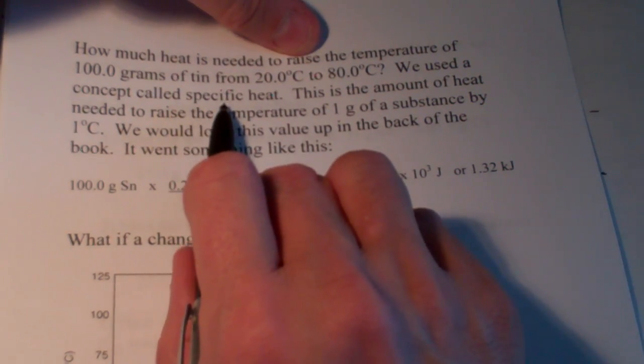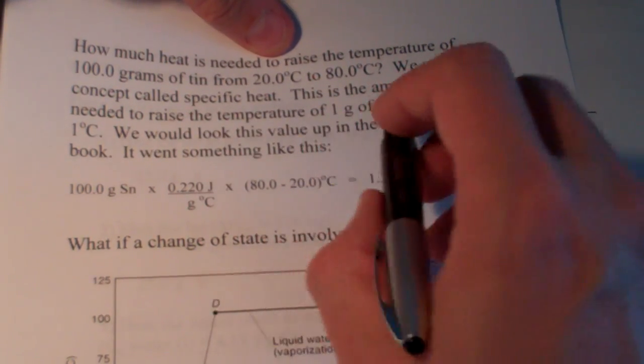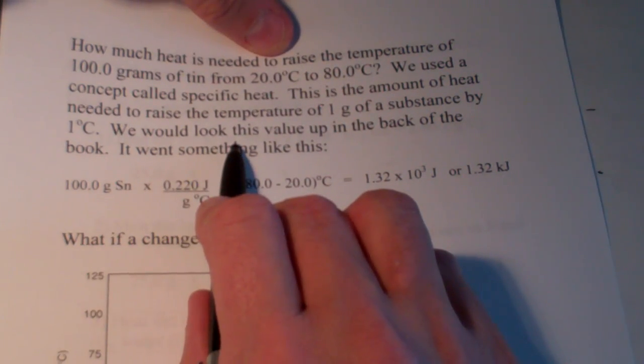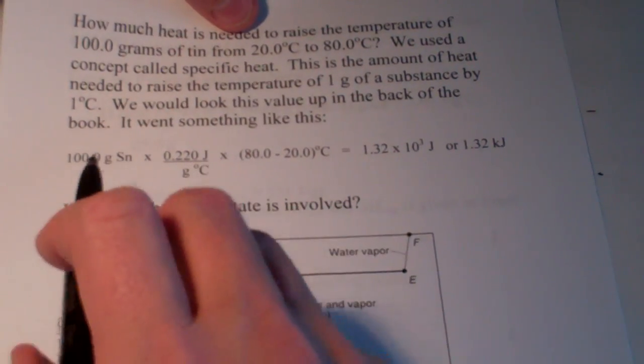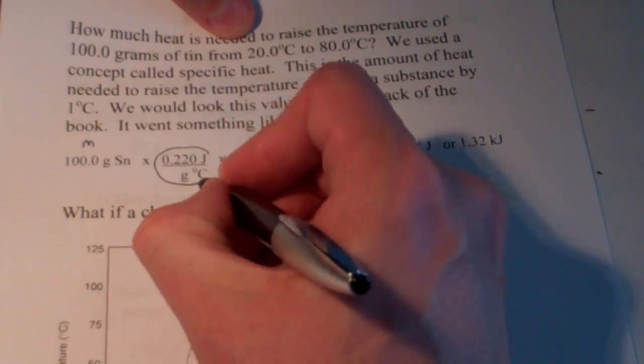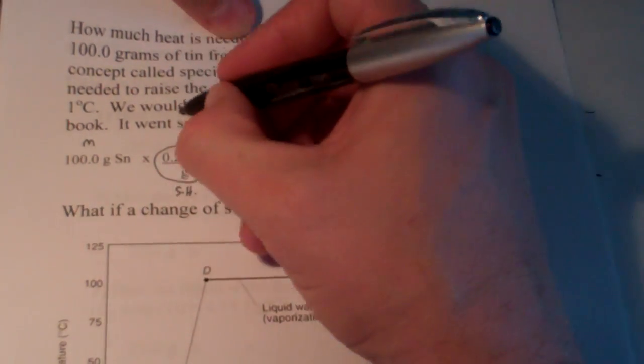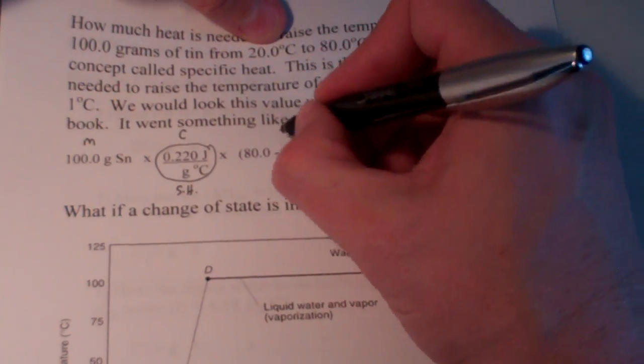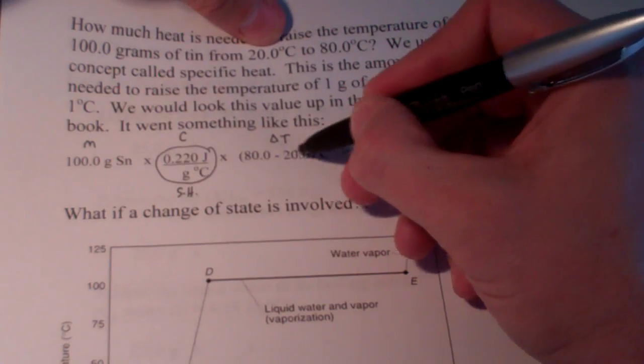Now, we're going to use a concept called specific heat. Specific heat, by definition, is the amount of heat needed to raise the temperature of 1 gram of something, in this case, tin, by 1 degree Celsius. And we can look these values up in a handbook or, in our case, in the appendix in the back of our book. So, we have 100 grams of tin, that's the mass of tin, times the specific heat of tin, times 80 minus 20 is my delta T. The temperature goes from 20 to 80. So, we just want to find the change in temperature here. So, it's going to be the difference between the high and the low, in this case.